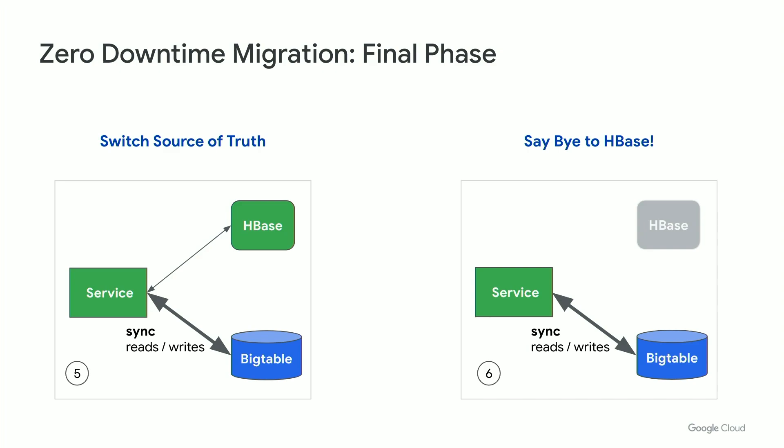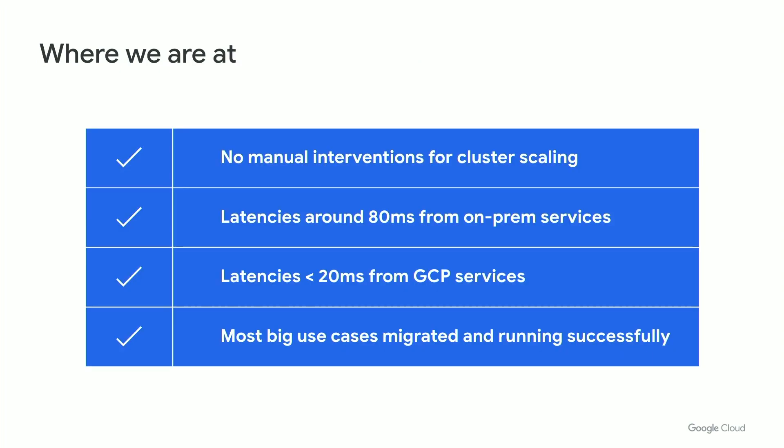We arrive at the final phase of migration. Here we switch to Bigtable as the source of truth, but continue to write to both HBase and Bigtable in case we need a rollback. After running in this state for a while and having gained sufficient confidence in the new stack, we finally cut ties with HBase. Where are we now? We no longer need manual interventions by SREs to scale our clusters, and that's been a huge operational relief. We see around 80 millisecond latencies to Bigtable from our on-prem services, and sub-20 millisecond latencies from our GCP-resident services, especially when the Bigtable cluster is in the same region. Most of our big NoSQL use cases have been migrated to Bigtable, and some have been successfully running for over a year now.